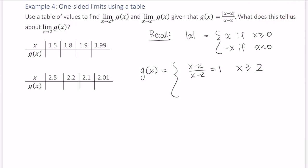Okay, so otherwise we have negative x minus 2 in parentheses over x minus 2, and this is just going to simplify to negative 1, and that's if x is less than 2.